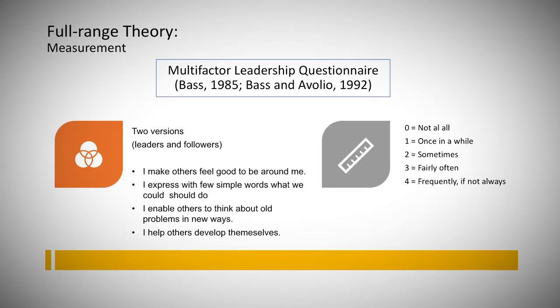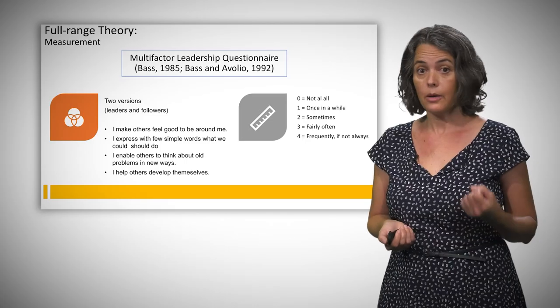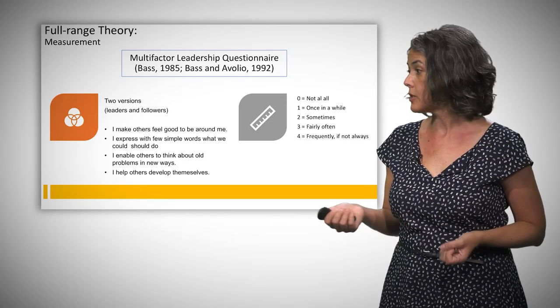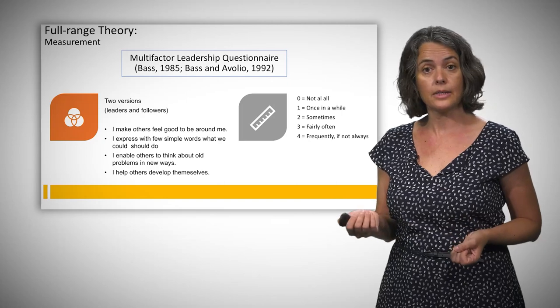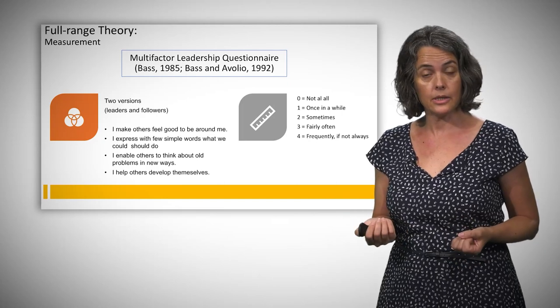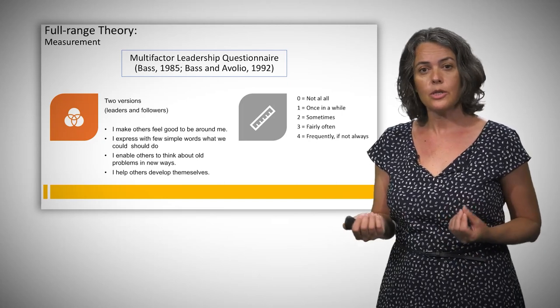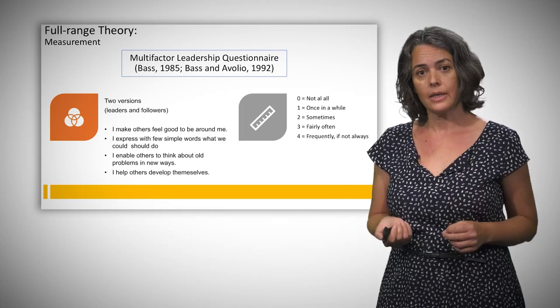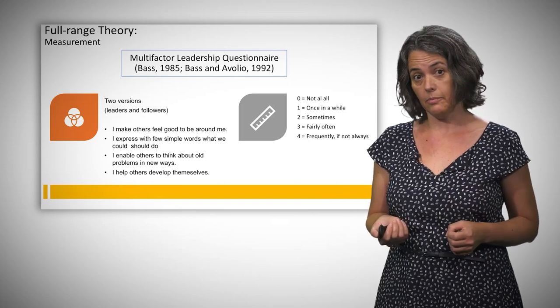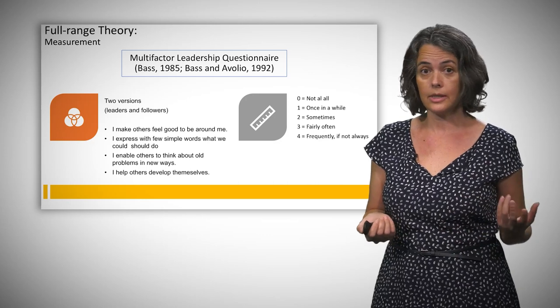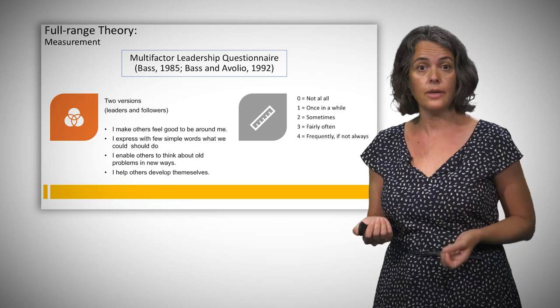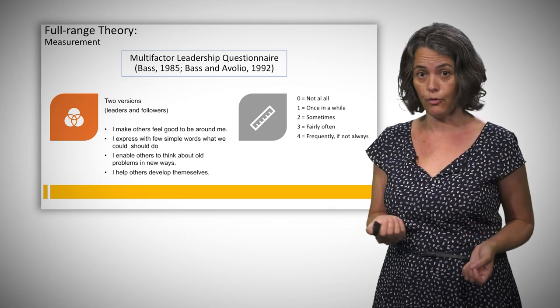The full-range model has been measured by the Multifactor Leadership Questionnaire. The questionnaire is composed of descriptive statements which are measured with a frequency Likert scale. Two versions exist: one for leaders and one for followers.